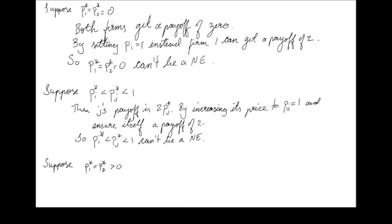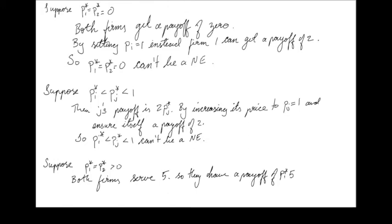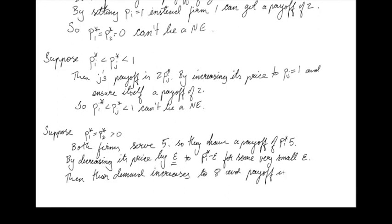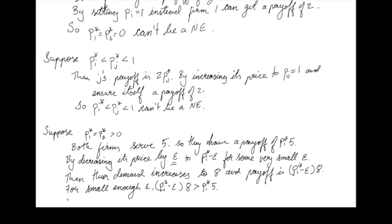Now consider the configuration where both firms set the same price, P1* = P2*, but that common price is bigger than 0. This case is very similar to the case without capacity constraints. When both firms have the same price, both serve 5, so each has a payoff of Pi* times 5. By reducing price by just a little bit — say Pi* minus epsilon — a firm can increase demand from 5 to 8, giving a payoff of (Pi* minus epsilon) times 8. For small epsilon, this exceeds Pi* times 5. So P1* = P2* with a common price above 0 can't be an equilibrium either.